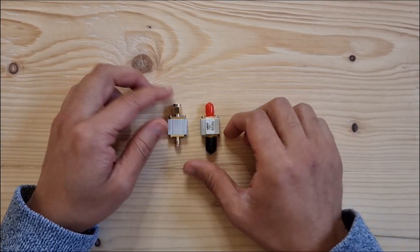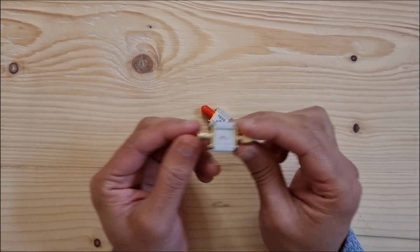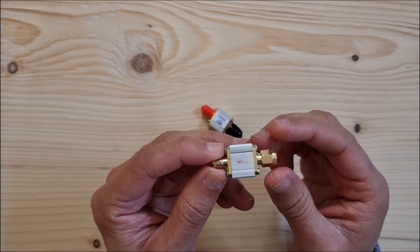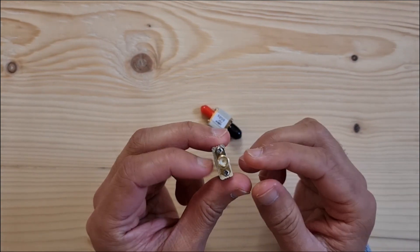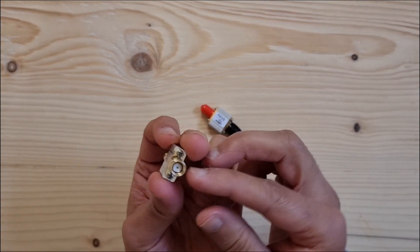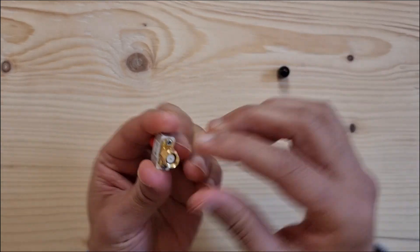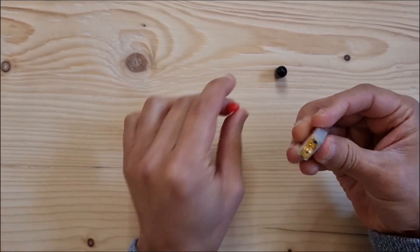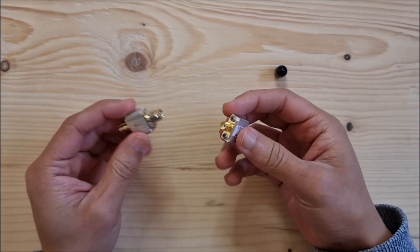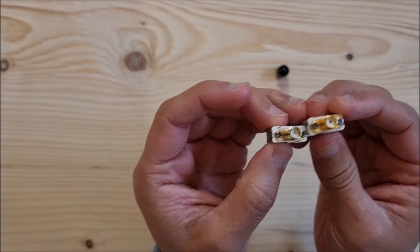What they do have are different connectors as I said in the last video. This one uses reverse polarity RP SMA male and female connectors and I assume this one will just be SMA. So these are just SMA connectors so you can see the differences here.